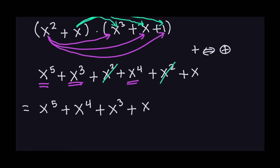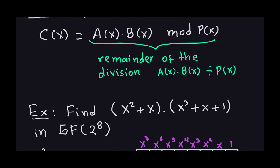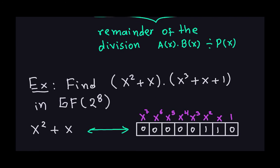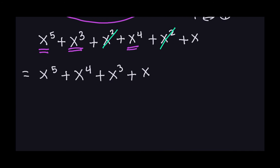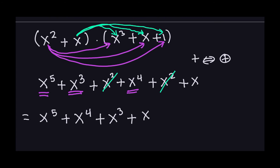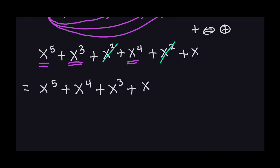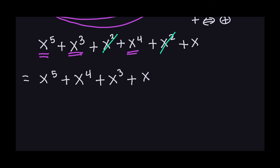This resulting polynomial has degree five, which is less than seven, so I don't need to divide it by p(x) and find the remainder. If you did divide by p(x), the remainder would be exactly this same polynomial because its degree is less than that of p(x). So x to the fifth plus x to the fourth plus x cubed plus x is the final answer — the product of those two polynomials in the Galois field, and it's indeed an element of the Galois field.